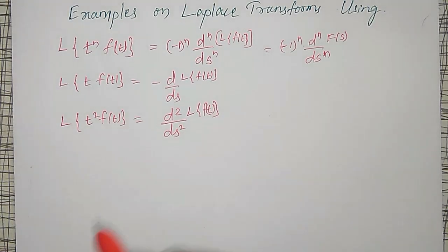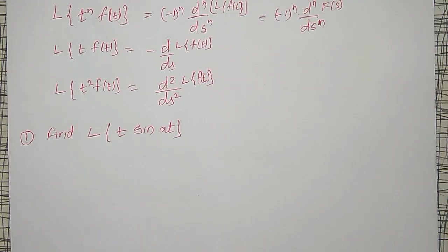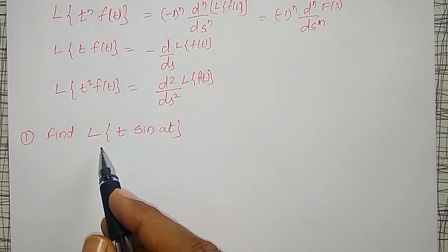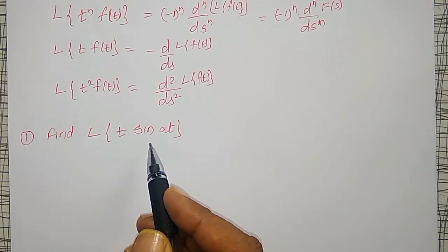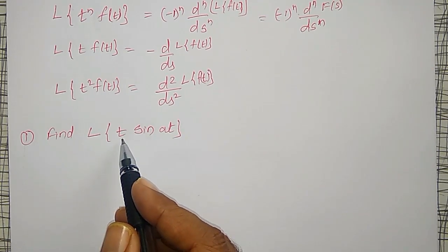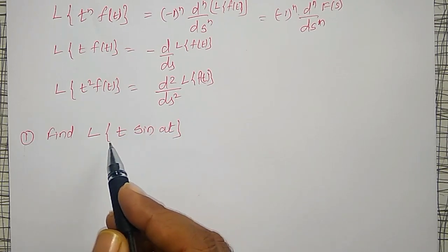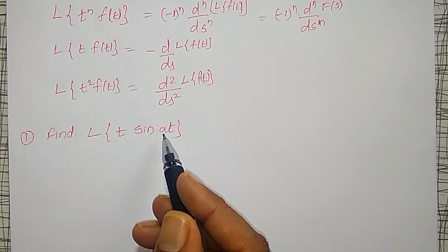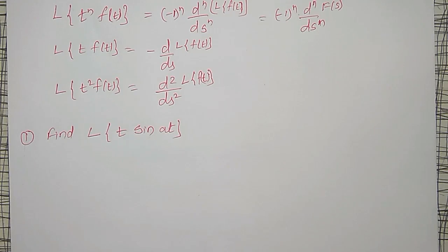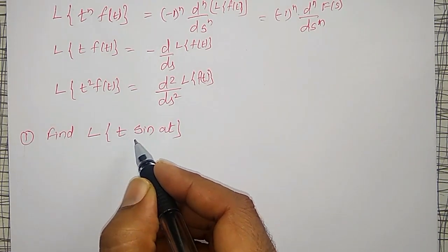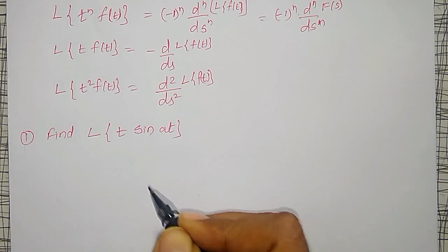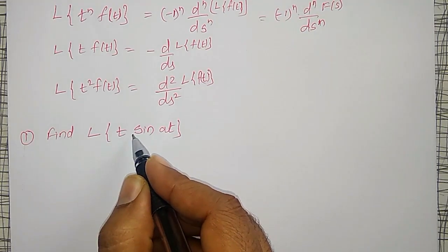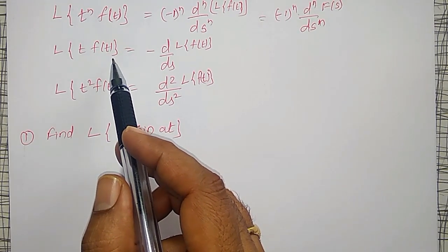Using these properties, I am going to solve some examples. Find the Laplace transform of t into sin(at). Here t is multiplied with sin(at). If addition or subtraction were in between, separate Laplace transforms could be calculated, but here it is a product, so I am going to apply this property.